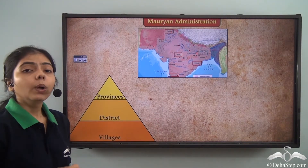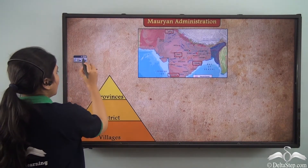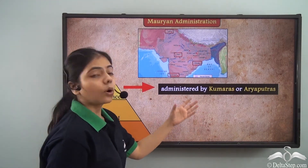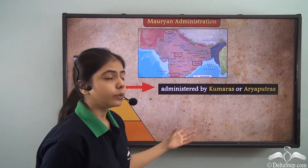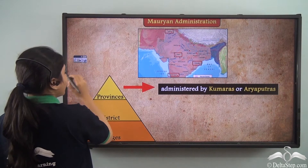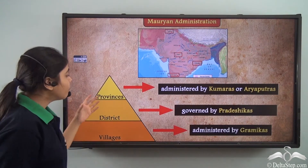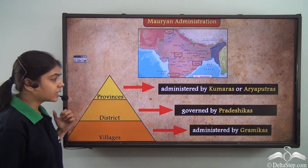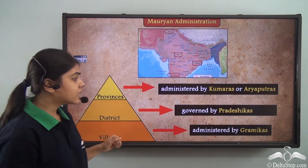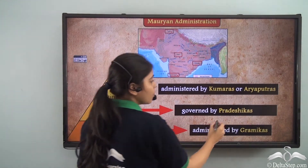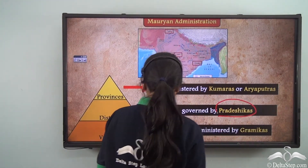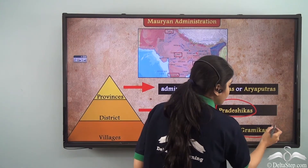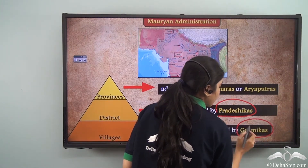These provinces were administered by the Kumaras or Aryaputras. The provinces were further divided into districts and villages. Districts were governed by the Pradeshikas, and villages were administered by people known as the Gramikas.